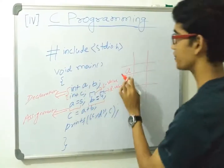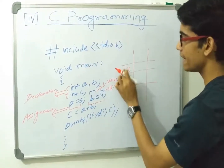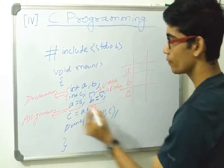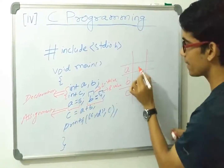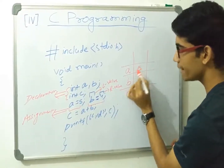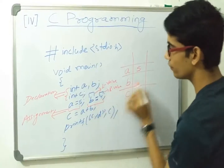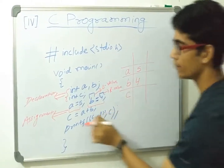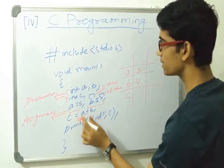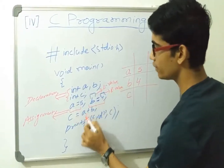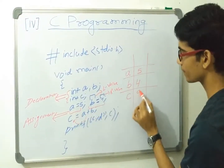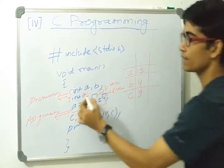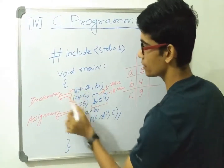When we declare, we are actually allocating memory for a, b, and c. We assigned 5, so 5 goes into a; we assigned 4, so 4 goes into b. Then we added a + b, which equals 9, so 9 goes into c. That is how the addition works.